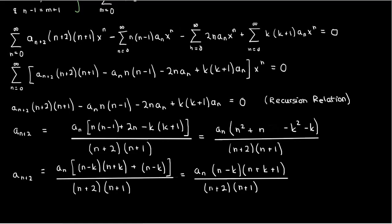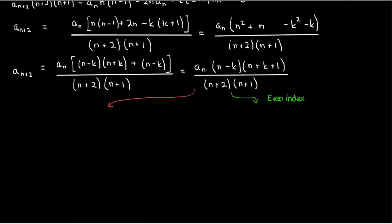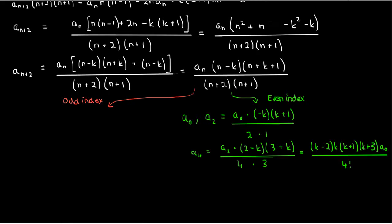In this recursion relation, each term is related to the coefficient two terms before it. So there's one solution for even index coefficients and another for odd index coefficients. For even coefficients starting at a₀, a₂ equals a₀ times negative k(k+1) over 2, and a₄ equals k minus 2 times k times (k+1) times (k+3) times a₀ over 4 factorial. The pattern continues for a₆, a₈, and so on.